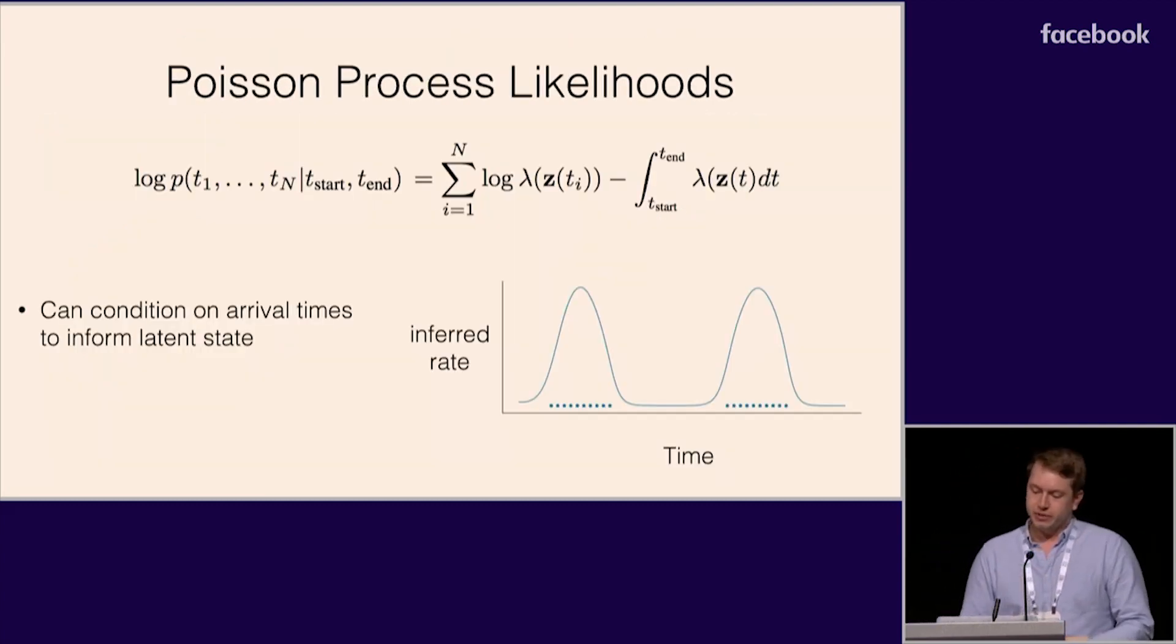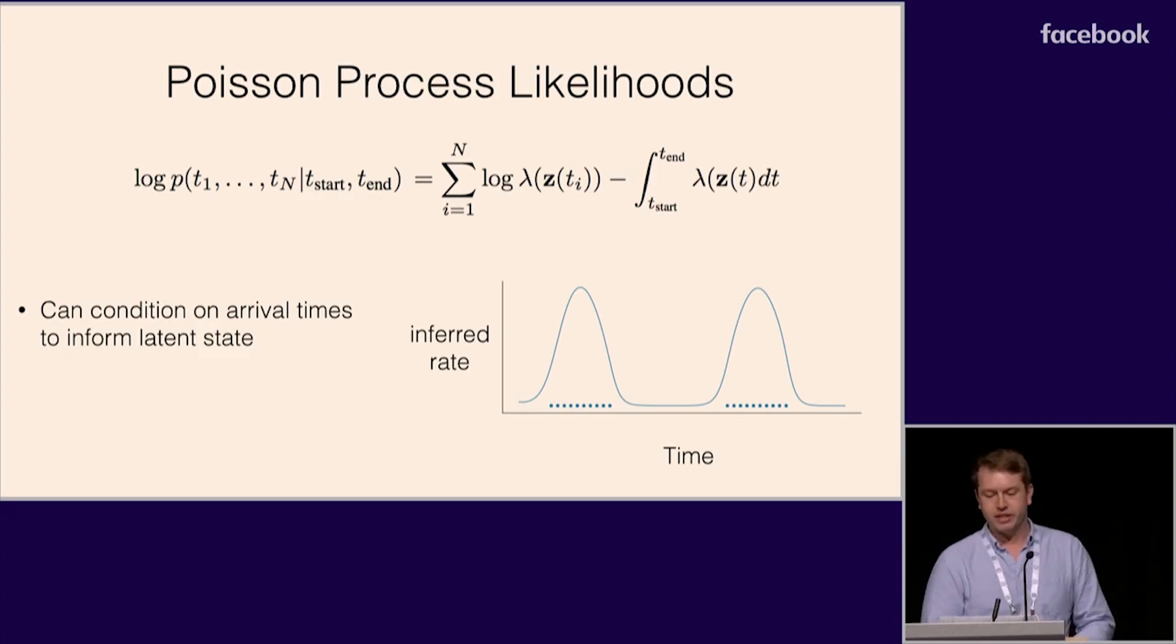For the computational neuroscientists in the room, you can also add Poisson process likelihood to this model and train it all at once. Poisson processes are a general way to define a distribution over the times at which we're likely to see data. We hope to use this, for example, for medical records. In that setting, the fact that someone came to the hospital at a particular time tells you a lot about their latent state.